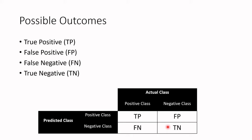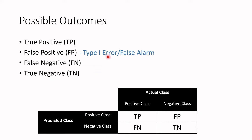There are a few other notes regarding this slide. It would be easiest to remember everything if you remember that everything that's true means the model was correct, and everything that is false means the model was incorrect. Regarding the false positive, it is also referred to as a type 1 error and sometimes as a false alarm. And the false negative is sometimes referred to as a type 2 error.